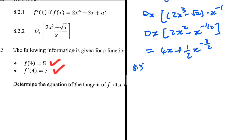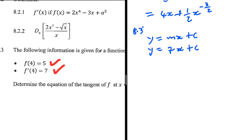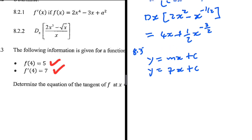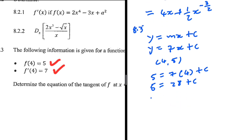So this is quite an easy one. y equals mx plus c. We already have the gradient — it is 7 at x equal to 4. So we have y equals 7x plus c, and we just need to determine c. We're given that when x equals 4, y is 5. So 5 equals 7 multiplied by 4 plus c. 7 times 4 is 28, so c equals 5 minus 28 which is minus 23. Therefore y equals 7x minus 23.